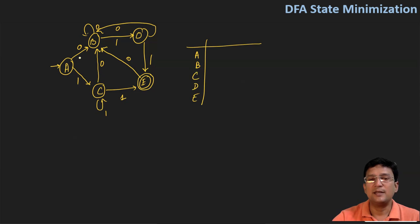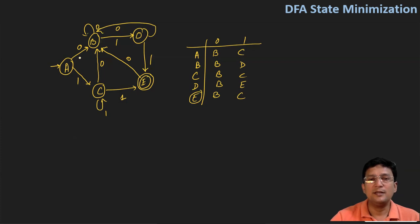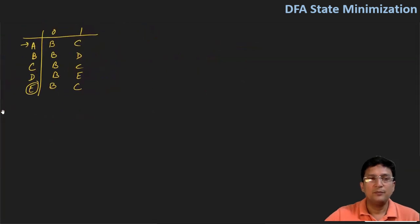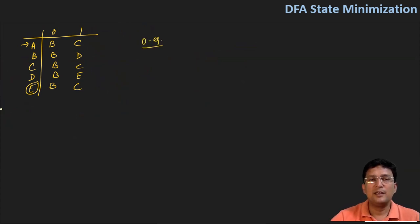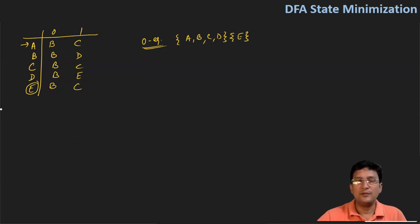I'll first find the zero equivalence. Zero equivalence means the string length is zero — you just segregate the final and non-final states. So A, B, C, D are the non-final states and E is the final state. That is the only thing you have to do for zero equivalence.